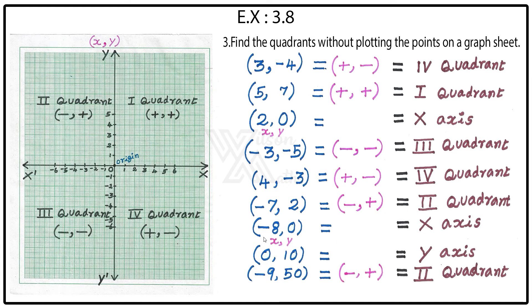Next point: minus 8 comma 0. Here the x value is minus 8 and the y value is zero. Therefore it lies on the x-axis.